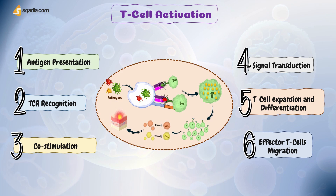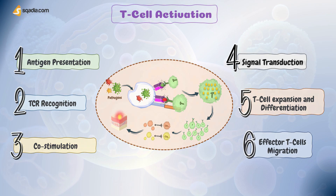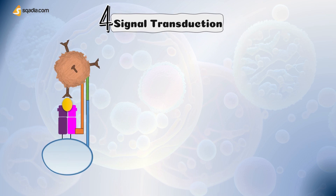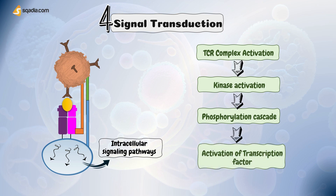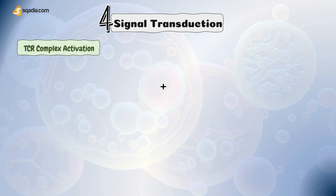So this was about co-stimulation, which is necessary along with TCR recognition. The next important step in T-cell activation is signal transduction. Following TCR recognition and co-stimulation, intracellular signaling pathways are activated within the T-cell, leading to a cascade of events that ultimately result in T-cell activation. Let's have a detailed overview of this process, broken down into a number of steps.